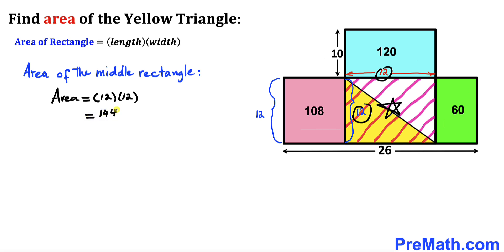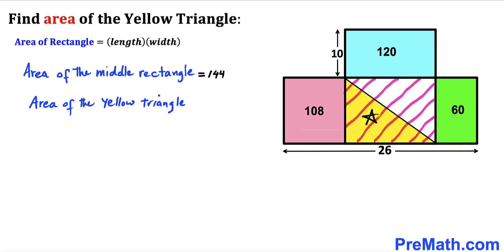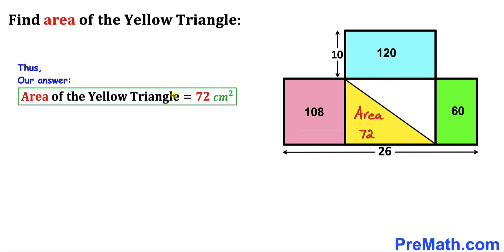Now let's make an observation: the diagonal is going to cut this rectangle into two equal parts, giving us two triangles — one yellow triangle and one white triangle. Therefore, the area of the yellow triangle is simply half of the rectangle's area: 144 divided by 2 gives us 72 centimeters square. So the area of the yellow triangle is 72 centimeters square. Thanks for watching and please don't forget to subscribe for more exciting videos.